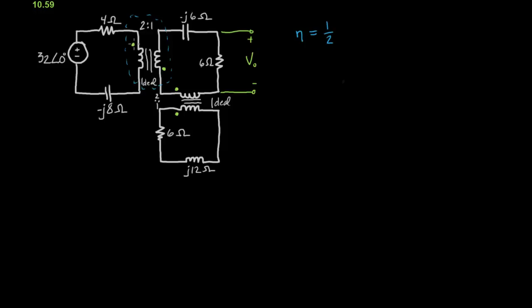Okay, and these are opposing, so we'll use the negative. So V1 equals minus V2 over N. And I1 equals minus N times I2.